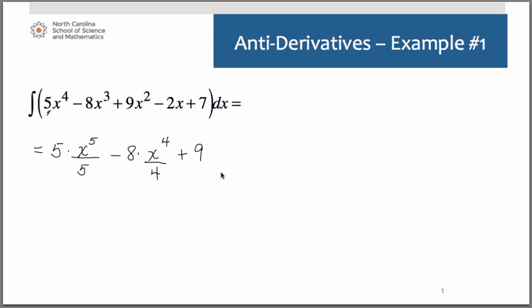The 9 remains as our coefficient in the third term. Add 1 to the exponent, divide by the new exponent. Now in the fourth term, remember, of course, the exponent is assumed to be 1. We keep the 2 as the coefficient, and we multiply that by x squared over 2. The last term is assumed to be x to the 0 power. So as you add 1 to the exponent, it becomes x to the first.